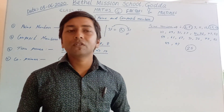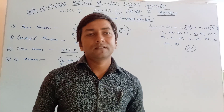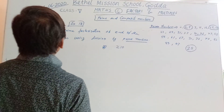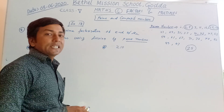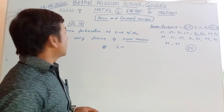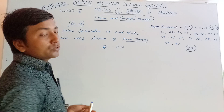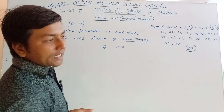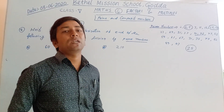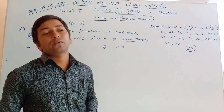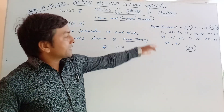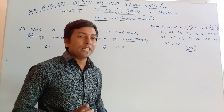Now we solve the exercise. I will solve exercise 18. Up to seven numbers, that is a very simple question, so you can solve yourself. You only have to write the prime numbers. Prime numbers I have written, so like this you can write also.